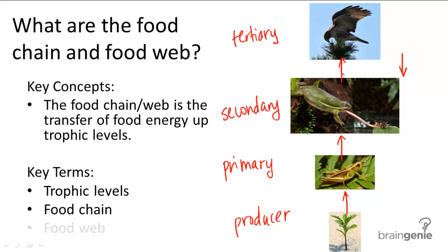So as I said, in this food chain, you have the plant giving energy to the grasshopper, giving energy to the frog, giving energy to the hawk.